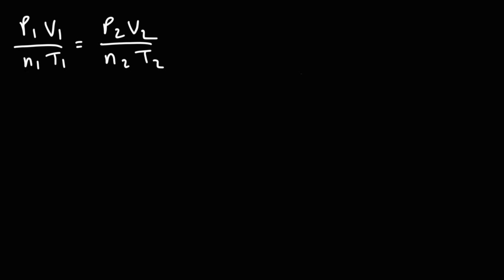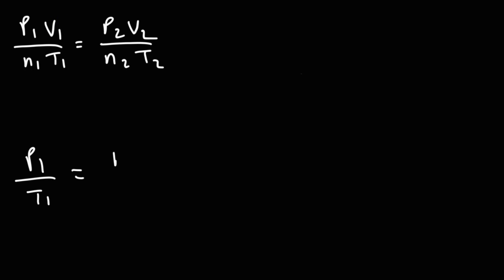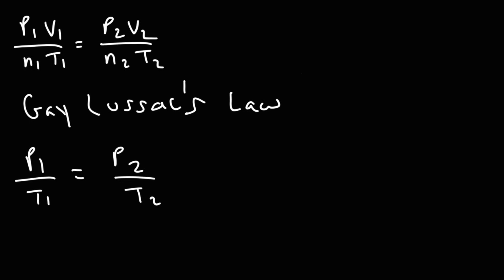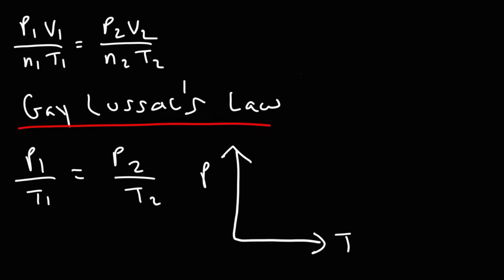Gay-Lussac's law shows the relationship between pressure and temperature. Holding volume and moles constant, we get P1 over T1 equals P2 over T2. Plotting temperature on the x-axis and pressure on the y-axis shows a direct relationship — as temperature goes up, pressure goes up. Imagine a gas in a rigid container: if you heat the gas, the pressure on the inside will build.